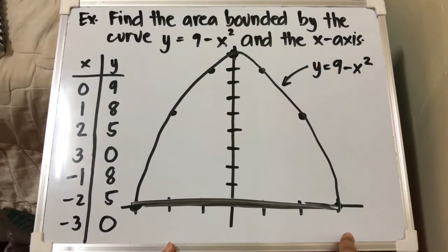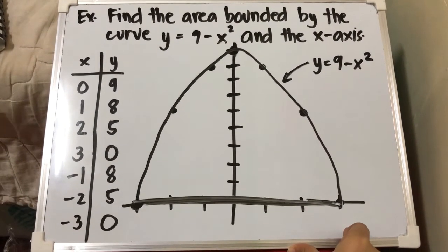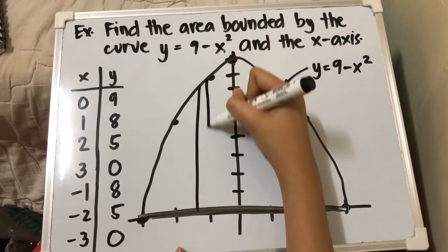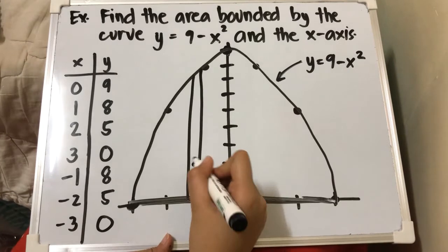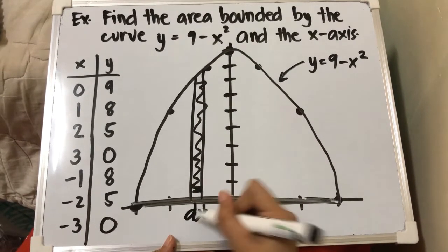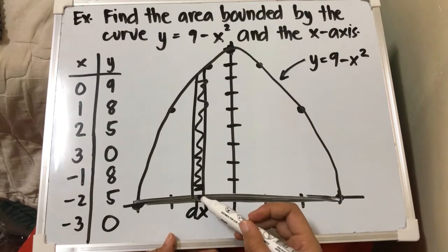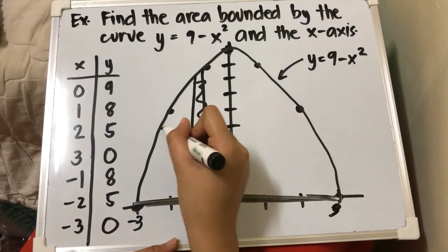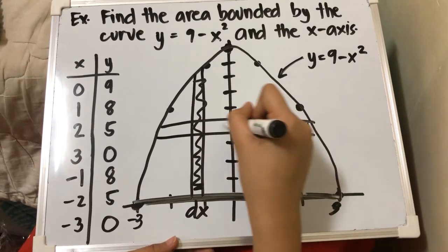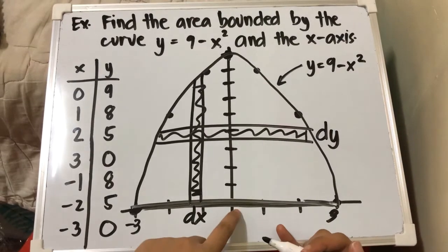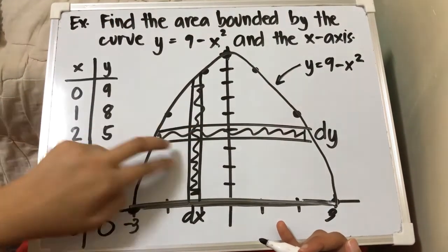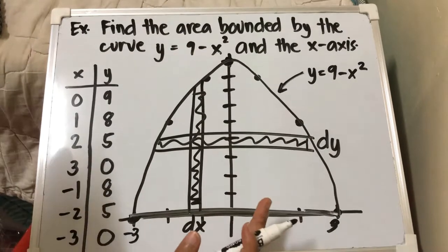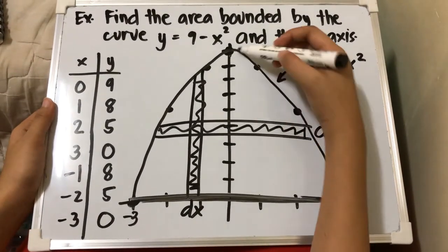For the limits using a vertical strip — since it is a change in x — the limits are from negative 3 to positive 3. If we solve using a horizontal strip — change in y — our limits will be from 0 to 9, because it extends indefinitely towards y. So for dx that's negative 3 to 3, and for dy that's 0 to 9.